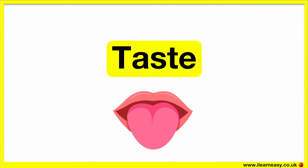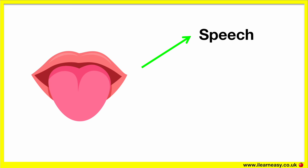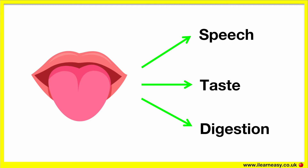Our tongue helps us to taste. The tongue is a muscular organ. It's very flexible and we are able to move it around. It helps us with our speech so we're able to pronounce words correctly. It helps us to taste things as it contains taste buds that allow us to perceive taste. The tongue also aids in digestion — when we put something in our mouth, our tongue helps us to move the food around our mouth when chewing it. Once the chewed food is mixed with saliva, the tongue moves the food to the back of the throat and down to the stomach.